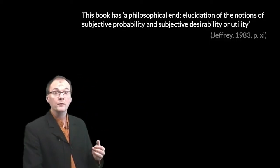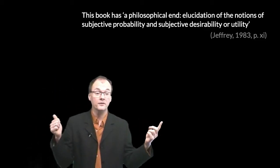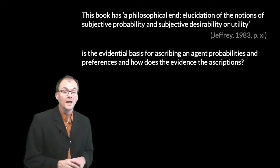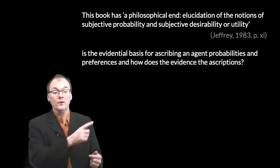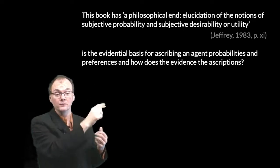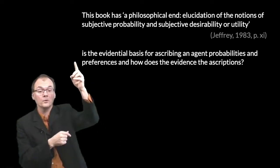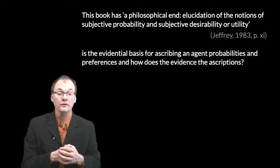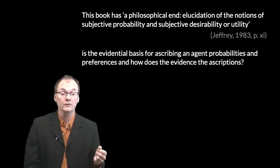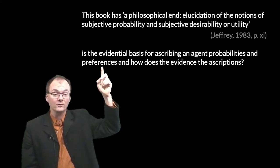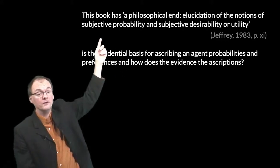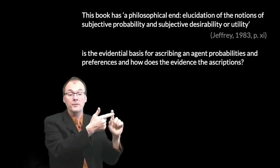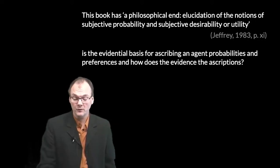This is exactly what we want, both from the point of view of the psychological theory of action we've considered and the philosophical theory. We want this elucidation very much. In order to get the elucidation, we're going to ask a question that doesn't sound like we're defining or elucidating anything at all. The question is: what is the evidential basis for ascribing probabilities and preferences, and how does the evidence support the ascriptions? In asking this question, we are eventually going to provide the elucidation that Jeffrey wants, but it's helpful to think about it as if we were looking for evidence, as if we already knew what subjective probabilities and preferences were and were just trying to gather what the evidence for them would be.